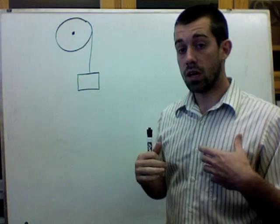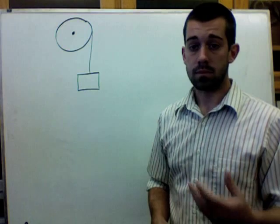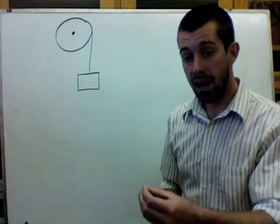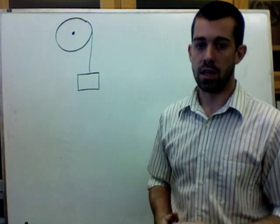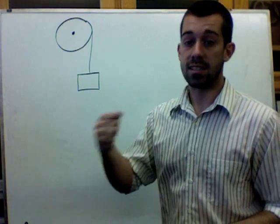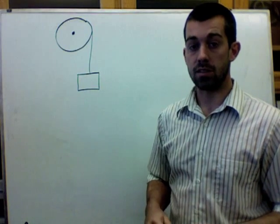And if the pulley were massless, this object would fall at negative 10 meters per second squared, but because the pulley has mass and it has rotational inertia, it's going to resist that acceleration, and so it's going to slow down the mass slightly.